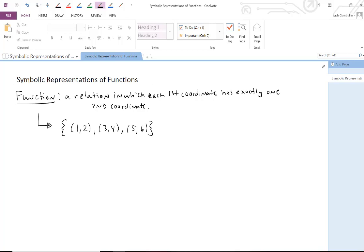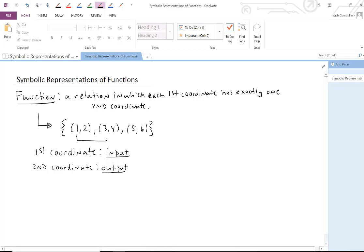So vocabulary-wise, for purposes of, as we'll see in a moment, we're gonna have another way of referring to the first and second coordinates. Another way we can refer to the first coordinate is by calling it an input. Second coordinate, we can call it an output. So above in the function that we wrote down, one, three, and five—those are all inputs, those are first coordinates. And then two, four, and six—those are the outputs.